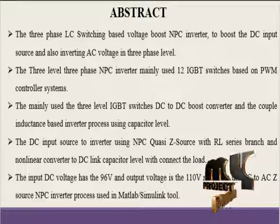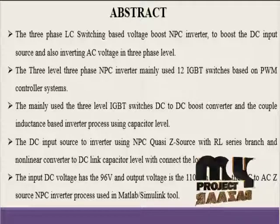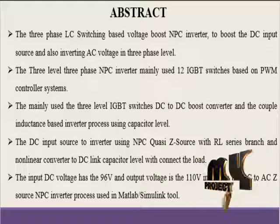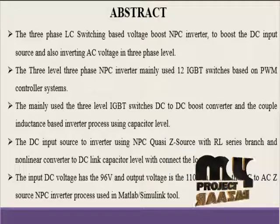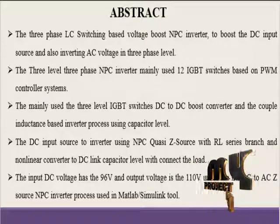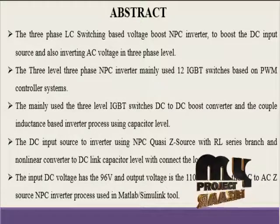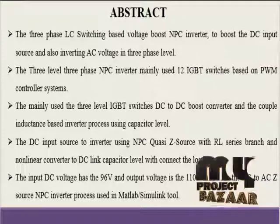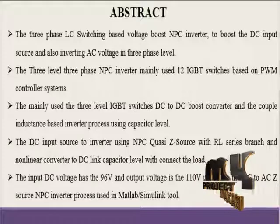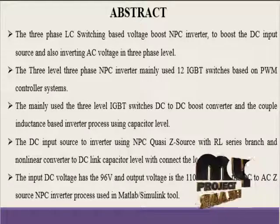Here we are using the DC voltage to split off the VG source for 48V input voltage. Then we have the NPC Inverter. In this model of inverter, we have 12 IGBT switches. We are giving pulse width modulation based switching pulses. After that, using the IGBT switches, we have 3 levels of DC to DC Boost Converters.